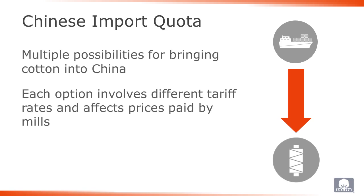Under the quota system, there are several possible routes for cotton to be brought into China. Each of these implies different tariff rates, and in turn, these rates imply the price paid by mills can vary. In the remainder of this episode, we will describe some details related to the different ways cotton is permitted to be imported into China.